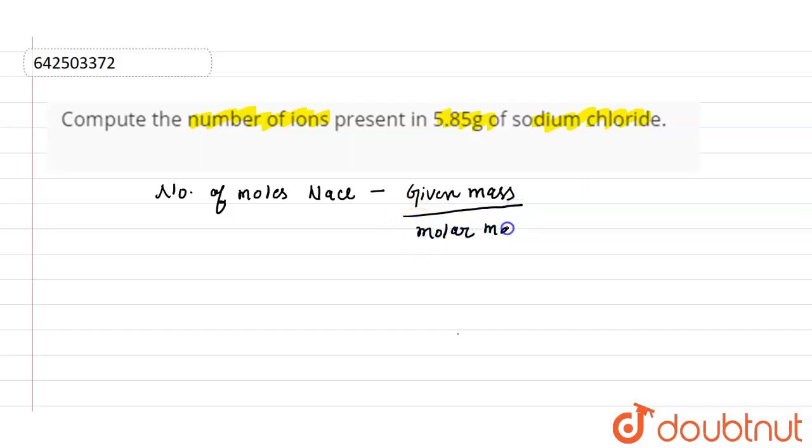First of all we need to find out the molar mass. So molar mass of NaCl will be 23 into 35.5. 23 is for sodium and 35.5 for chloride, which is equal to 58.5.